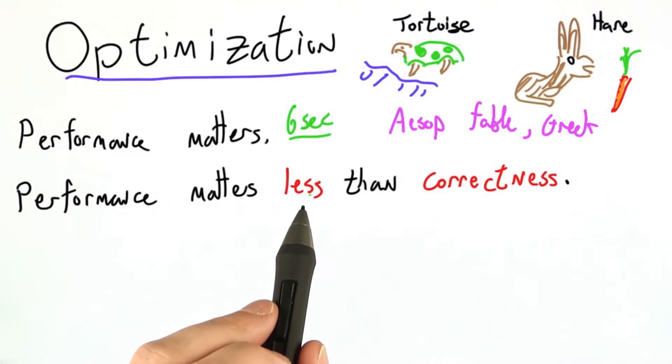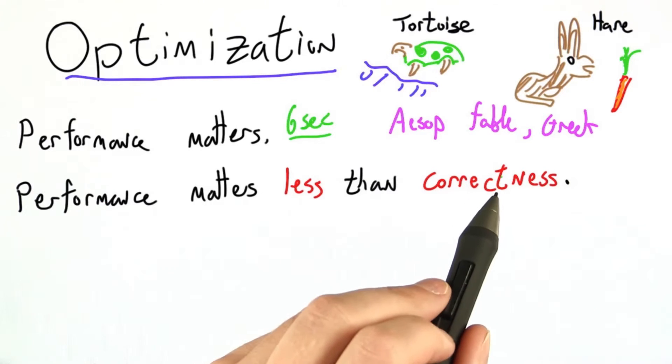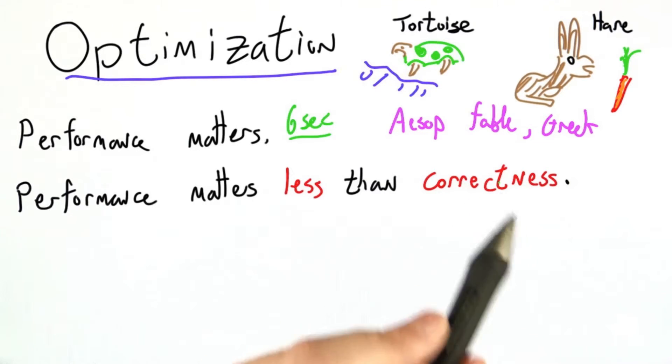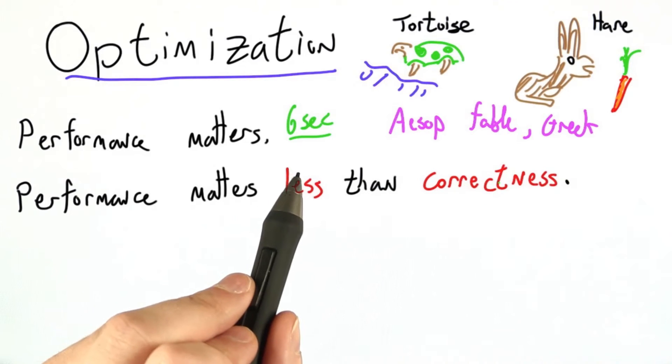performance matters less than correctness. Job one, test it, debug it, get the right answer. Job two, make it fast.